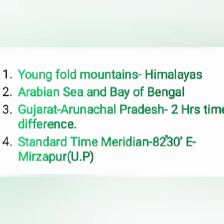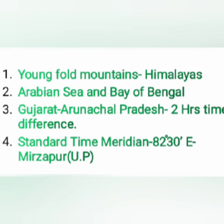There are also four important points about the physical features of India. First, India is bounded by the young fold mountains in the north and northwest, called the Himalayas. Second, the southern extension of India — the South Indian portion — divides the Indian Ocean into two: the Arabian Sea in the west and the Bay of Bengal in the east. Third, there is a time difference of two hours between Gujarat and Arunachal Pradesh.